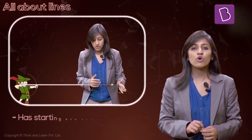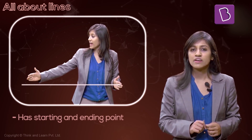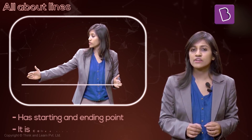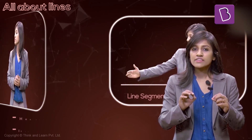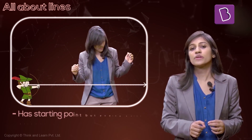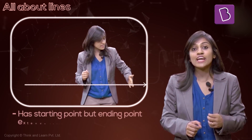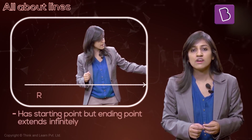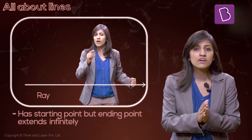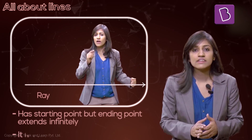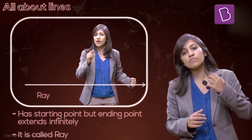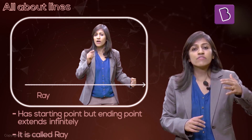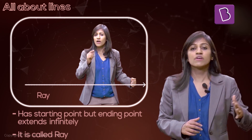In the first case, we had a starting point and an ending point, so that was a line segment. In the second case, we did have a starting point but we let the end point go on. That is called a ray — a ray goes on from a point infinitely, or forever, in one direction.